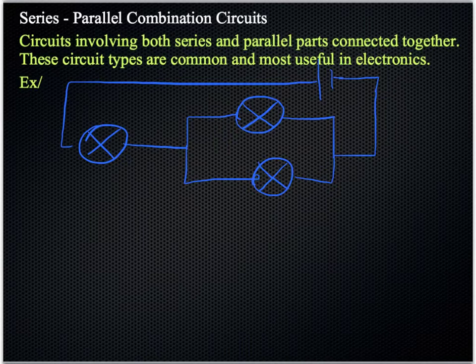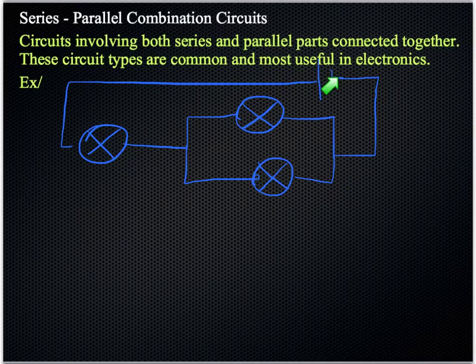Now, most useful circuits involve a combination of series and parallel bits, and in this case, in this example, we've got a single bulb here, which is in series to this parallel section here, which is connected back to the cell. So, here's a cell. The current will flow along here through this bulb. All the current goes through that first bulb.